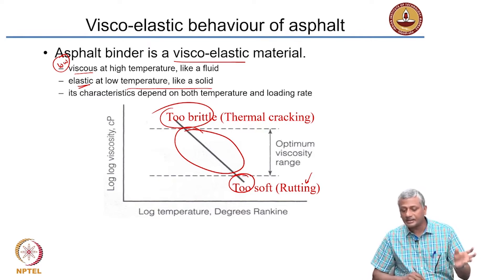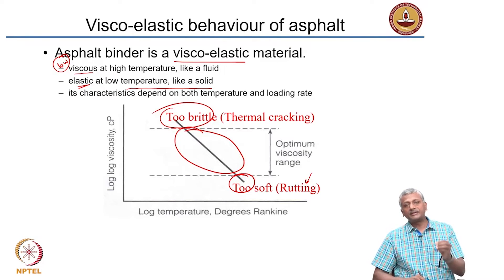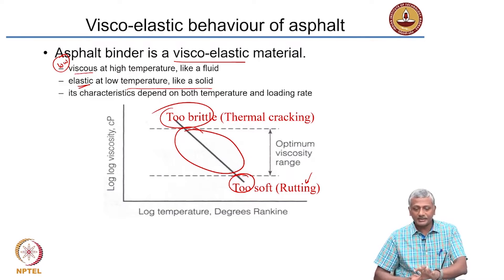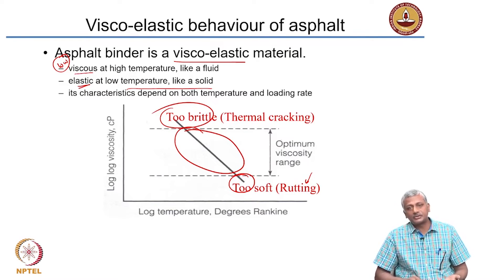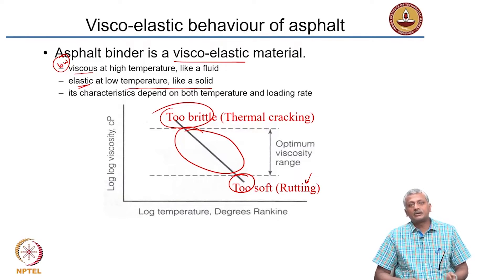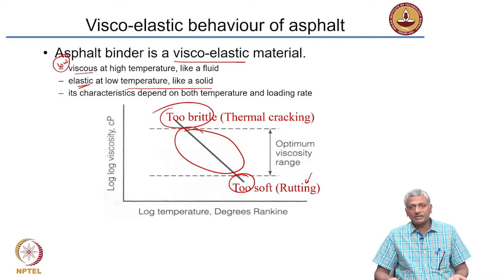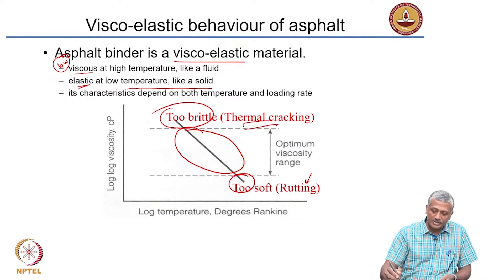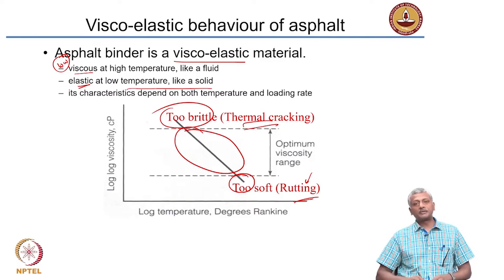Characteristics of the asphalt, like any other polymer, will depend on both temperature and the loading rate. A logarithmic scale of viscosity against the logarithmic scale of temperature gives a straight line relationship. Very high temperatures result in asphalt with very low viscosity, causing problems like rutting. Very low temperatures make asphalt very brittle and cause cracking. So thermal cracking at low temperatures and rutting at high temperatures are the major distresses.